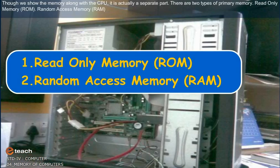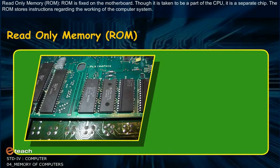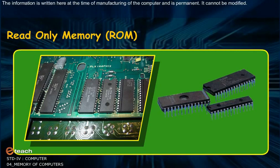There are two types of primary memory: 1. Read Only Memory, that is, ROM, and 2. Random Access Memory, that is, RAM. ROM is affixed on the motherboard. Though it is taken to be a part of the CPU, it is a separate chip. The ROM stores instructions regarding the working of the computer system. The information is written here at the time of manufacturing of the computer and is permanent. It cannot be modified.